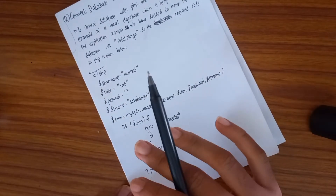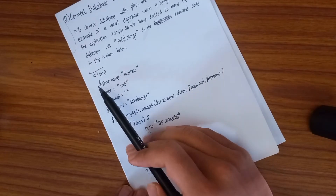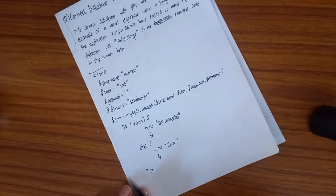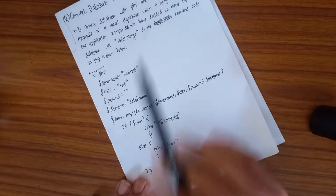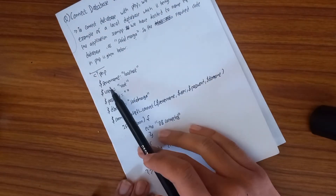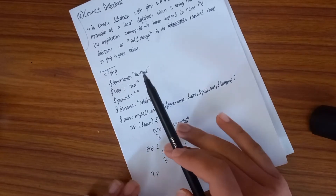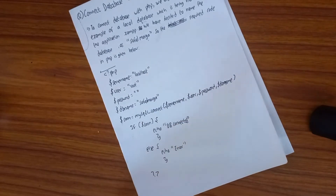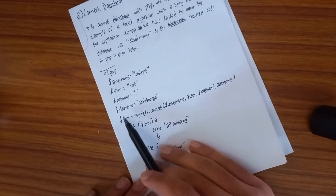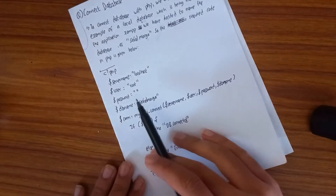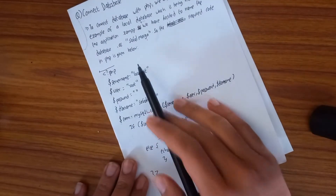Inside the PHP code, we declare variables. The variable '$servername' is declared and assigned the string value 'localhost'. Then '$username' is declared as a string variable with the value 'root'. The '$password' variable is assigned an empty string. And '$dbname' is the database name variable.